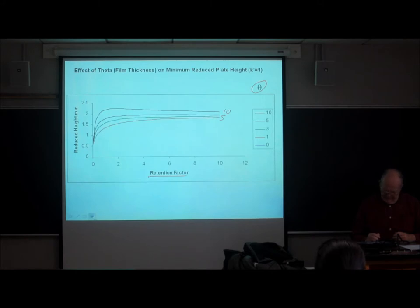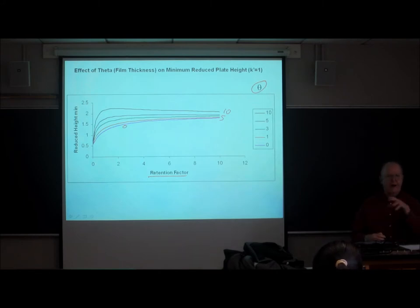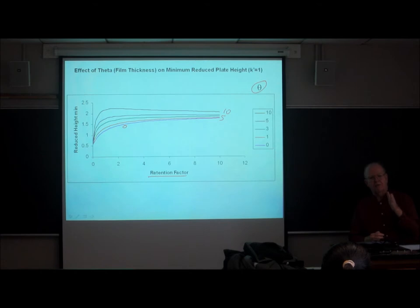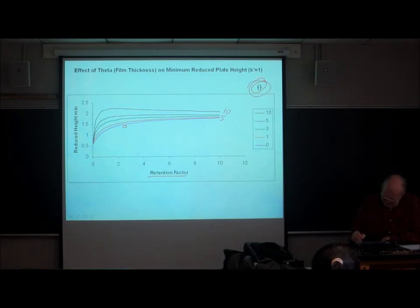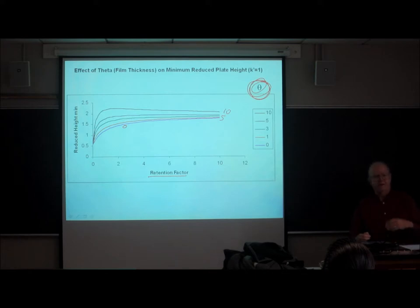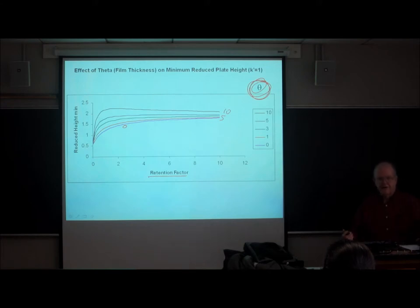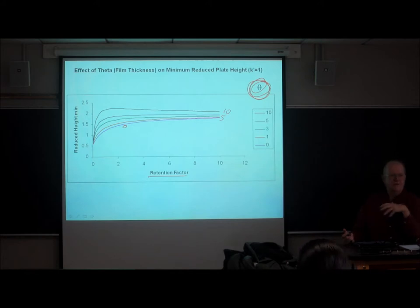As we go down and down, we eventually get to theta of zero, which is an infinitely thin film of stationary phase — that gives our minimum value of the reduced plate height at the optimum of the Van Deemter curve. An infinitely thin film of stationary phase with a retention factor other than zero is purely hypothetical; it's ideally what you want, but you can't get it.